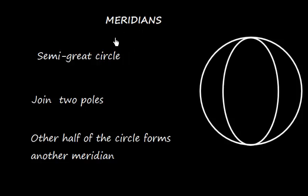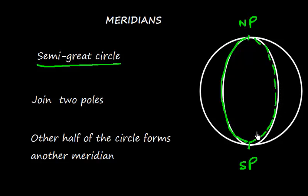Now, let me define Meridians. The Meridians are semi-great circles and they join two poles. Here suppose this is a North Pole and this one is a South Pole. These are semi-great circles. This one is one semi-great circle and the other half of the circle is this one. That will form another Meridian.